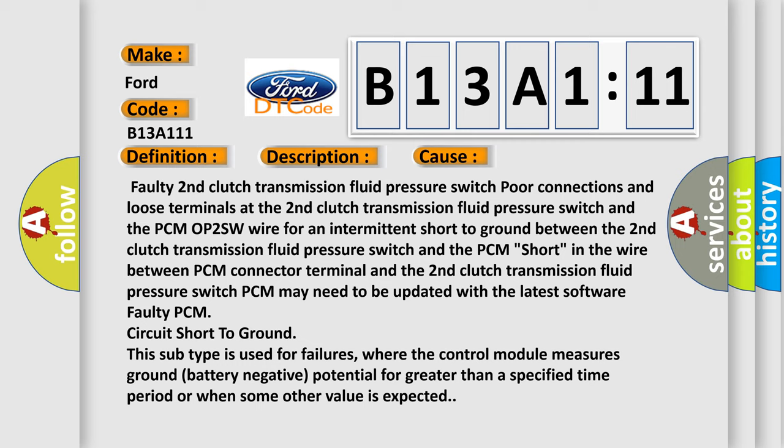Short in the wire between PCM connector terminal and the second clutch transmission fluid pressure switch. PCM may need to be updated with the latest software. Faulty PCM circuit short to ground. This subtype is used for failures where the control module measures ground battery negative potential for greater than a specified time period or when some other value is expected.